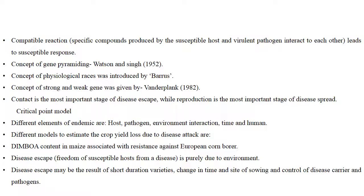Contact is the most important stage of disease escape, while reproduction is the most important stage of disease spread — this is the critical point model. Different elements of an epidemic are host-pathogen-environment interaction, time, and human intervention. Different models exist to estimate crop yield loss due to disease attack. Dimboa content in maize is associated with resistance against European corn borer.